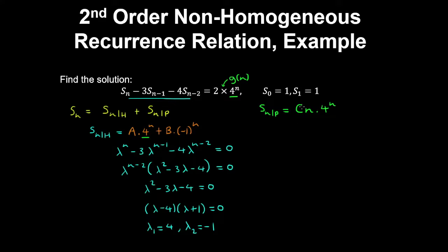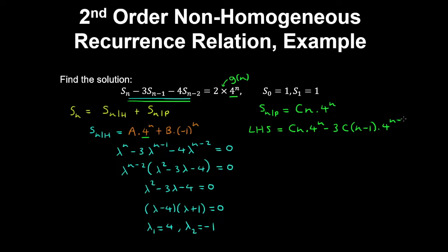Substituting this into the left-hand side of the recurrence relation, we get s(n) = c·n·4ⁿ, minus 3·s(n-1) which is c·(n-1)·4ⁿ⁻¹, and then minus 4·s(n-2) which is c·(n-2)·4ⁿ⁻².